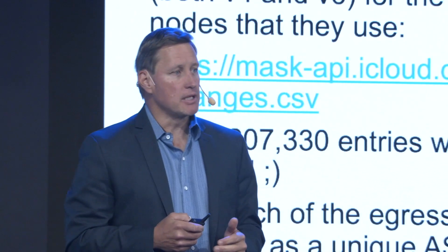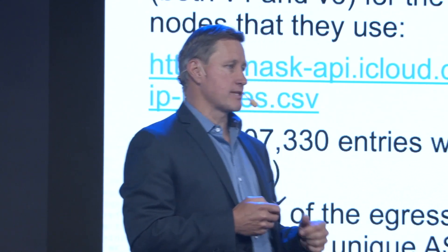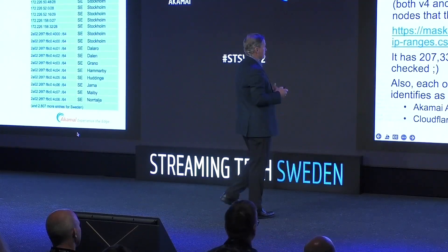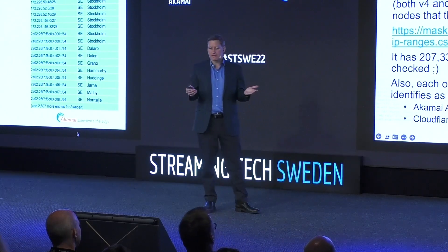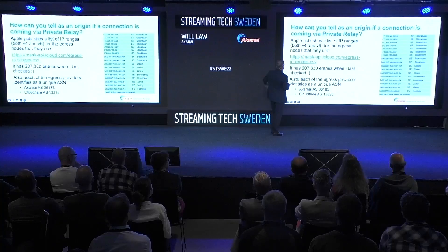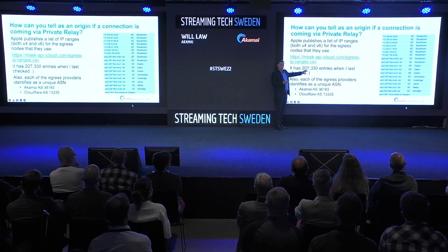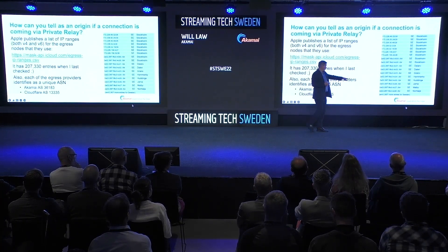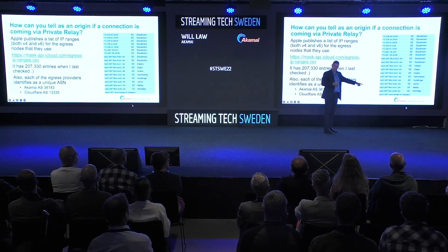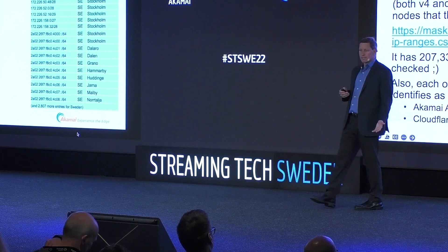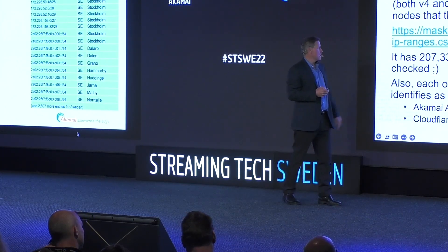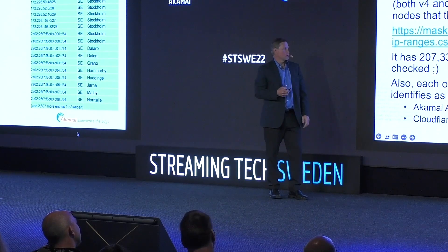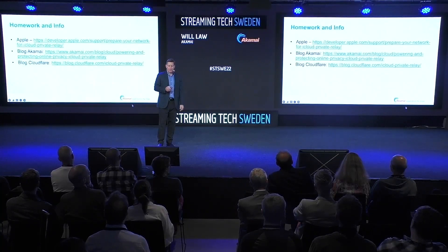Your next question may be: how do I, as an origin provider, tell if a connection is coming at me from Private Relay? There are a number of ways to do it. Firstly, Apple publishes a list of IP ranges — V4 and V6 addresses — published publicly. 207,000 entries when I checked last week. And in Sweden, there are 2,807, of which I list the first here. So you can see exactly where these relay points are emanating. These are proxy B relay points, the ones that you will see in your origin. And here are some links for homework: Apple speaking about their own solution, and blogs from both Akamai and Cloudflare about the proxies.